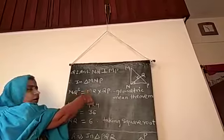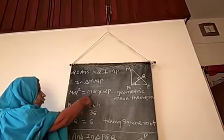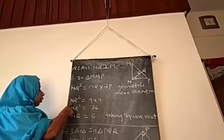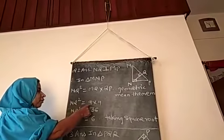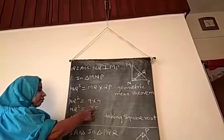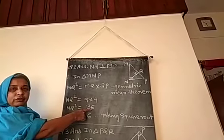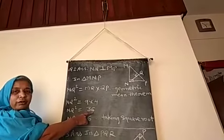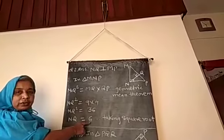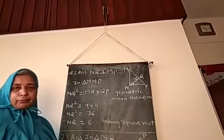Putting in the values given in the question for MQ and QP: NQ squared equals 9 multiplied by 4, giving a product of 36. Since 36 is the perfect square of 6, taking the square root gives NQ equals 6.